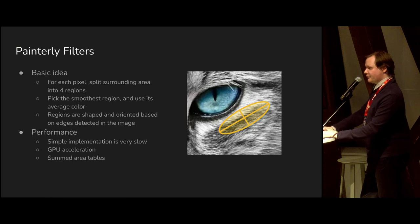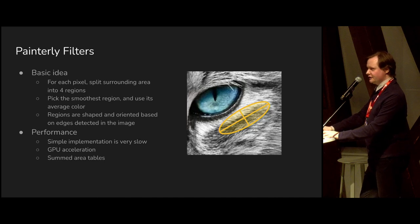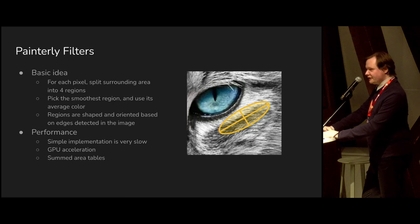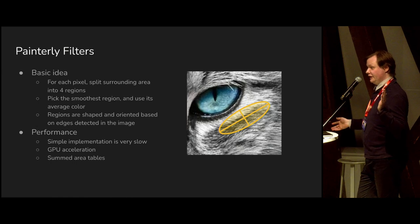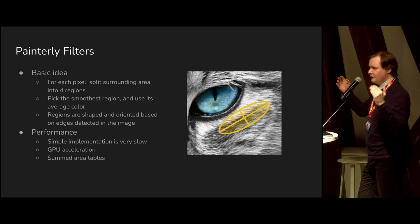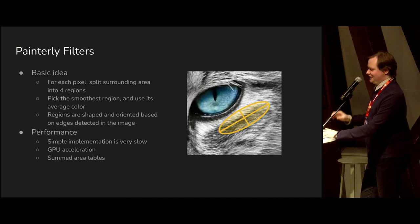We also added variable control for the radius — how much painterly the result becomes in a local area — giving you artistic control over whether the background or foreground is more painterly. Surprisingly, it's mostly stable for animation. The basic idea is that for each pixel you get a neighborhood, divide it into zones, pick the color of the smoothest area aligned to the edge orientation, and replace the pixel color with that. Following the original paper gives a beautiful but slow result, but using summed area tables allows you to calculate variance very efficiently, making it almost real-time on a GPU.